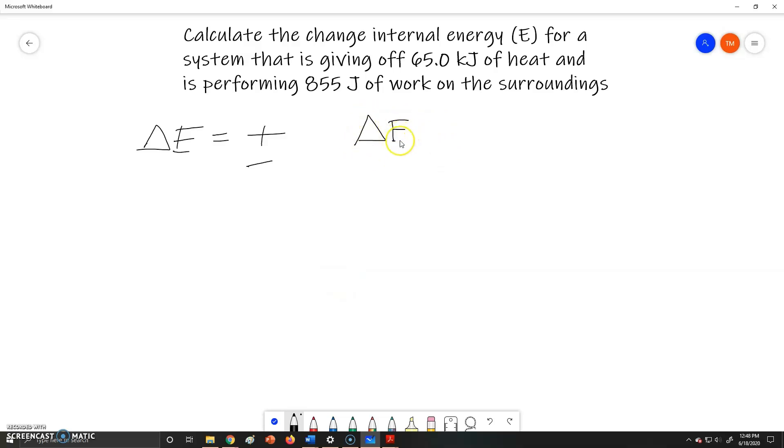We can write the total change in energy as equal to Q plus W, where Q is your heat and W is your work. So the total energy is just equal to the amount of energy change from heat and work.